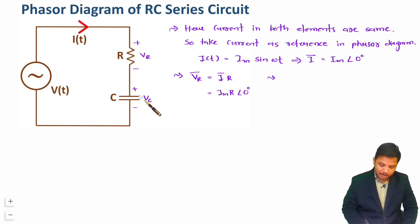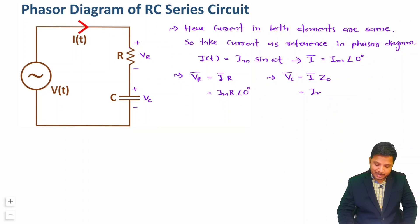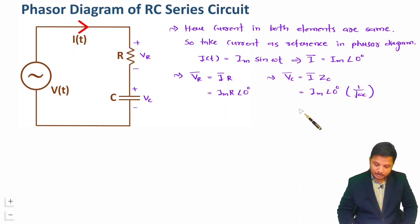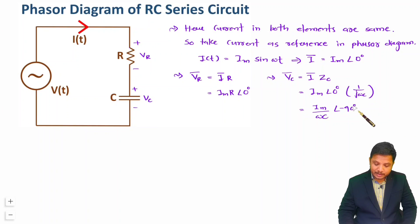Now for VC in phasor form: VC = I·Zc = Im∠0° × (1/jωC). The magnitude is Im/ωC, and since 1/j equals −90°, the phase becomes 0° + (−90°) = −90°. So VC has a phase angle of minus 90 degrees.